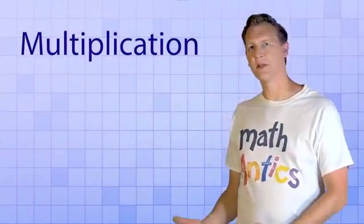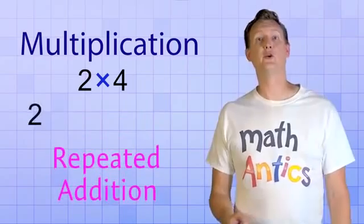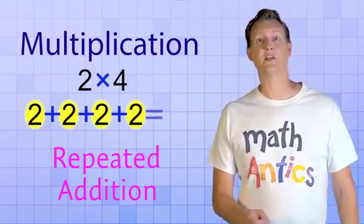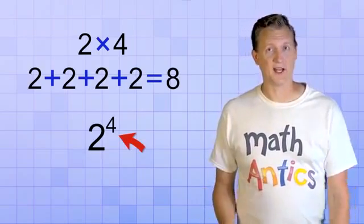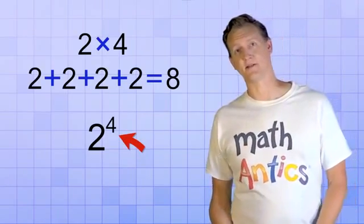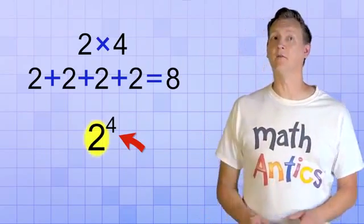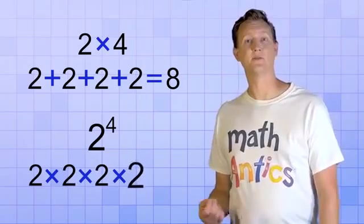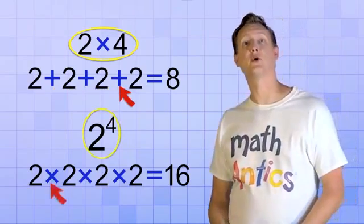To help you understand what I mean, let's review multiplication for just a second. Do you remember how multiplication is basically repeated addition? For example, 2 times 4 is a shorthand way of writing 2 plus 2 plus 2 plus 2. It's the same as four 2's being added together, which equals a total of 8. Now let's compare that to a similar exponent. You just need to know that this exponent tells us to take the number 2 and multiply it 4 times. In other words, you would take 4 2's and multiply them together: 2 times 2 times 2 times 2, which would equal 16. So multiplication shows repeated addition and exponents show repeated multiplication.